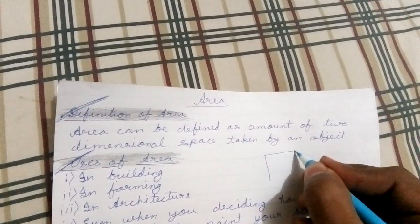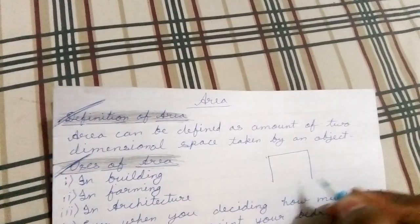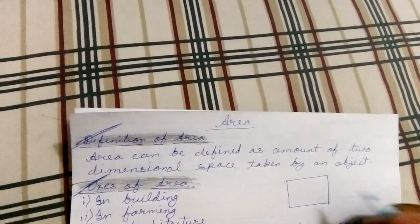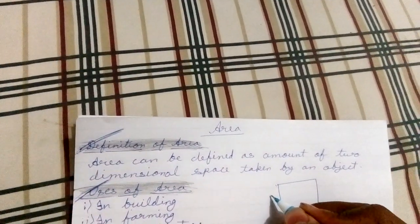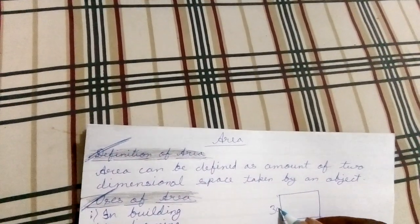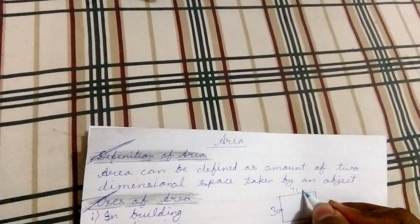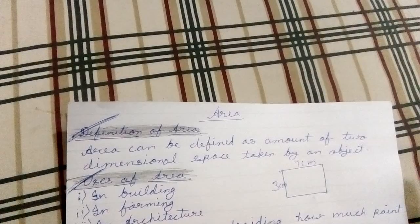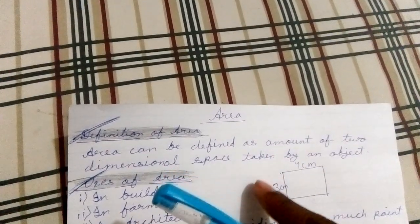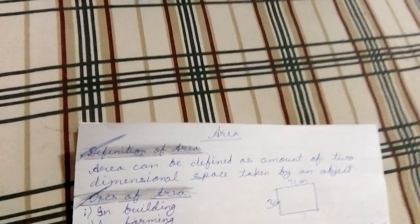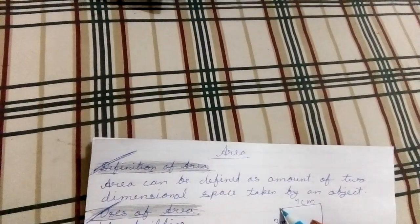Suppose this is a rectangle. So suppose this is 3 centimeters and this is 4 centimeters. What is the definition? Area can be defined as the amount of two-dimensional space taken by an object.